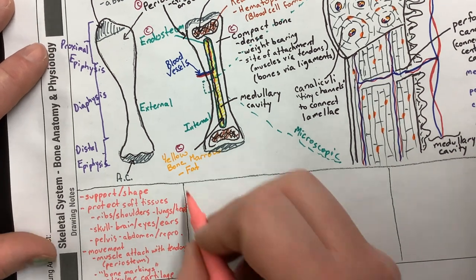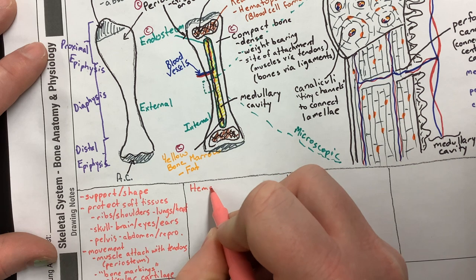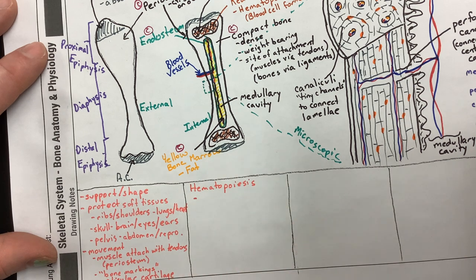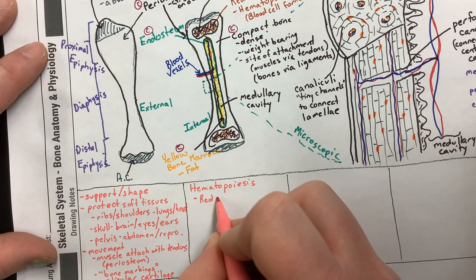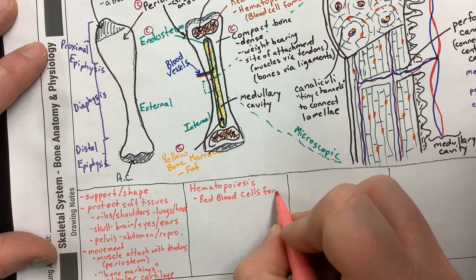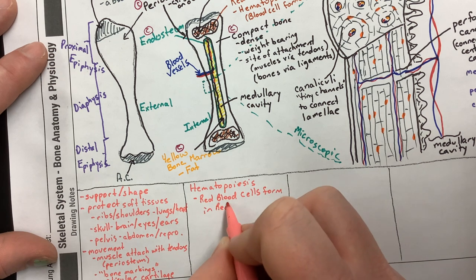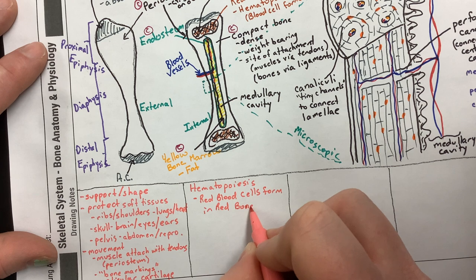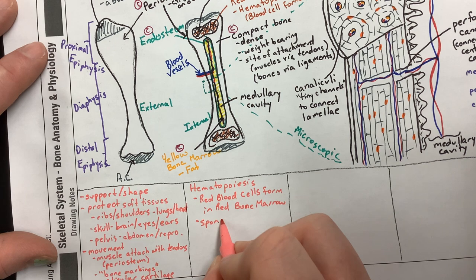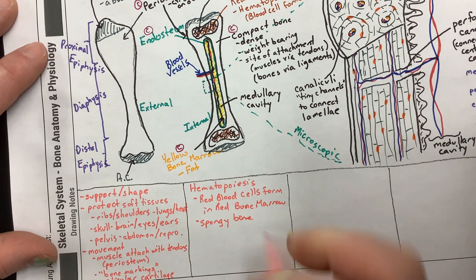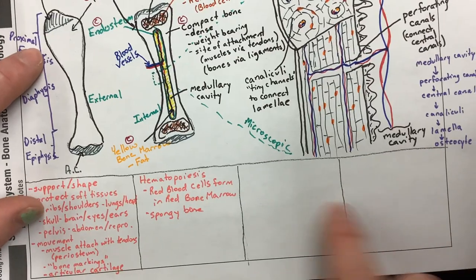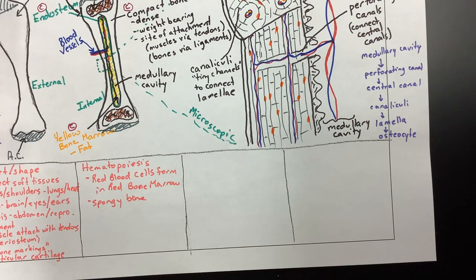Next is the function of hematopoiesis — the formation of blood cells. Red blood cells form in red bone marrow, which is located in spongy bone. The gaps in spongy bone allow red bone marrow to sit there as a site of red blood cell formation.